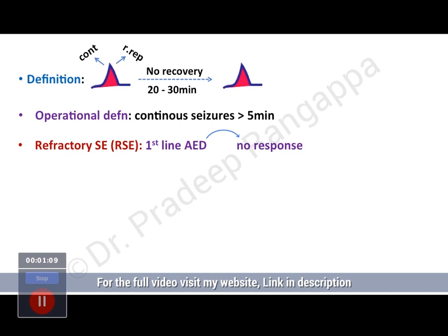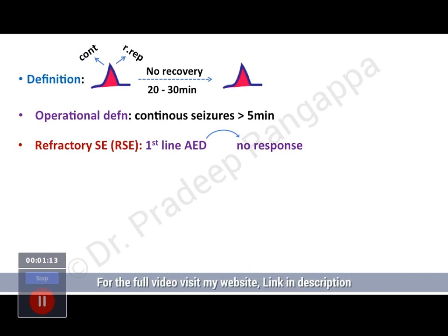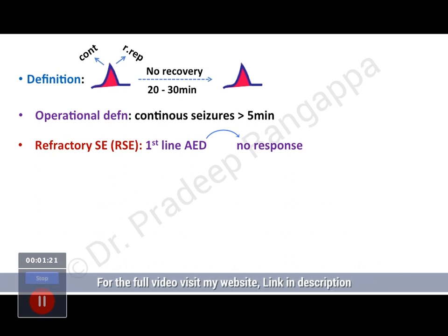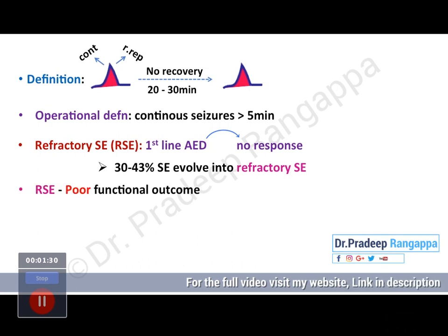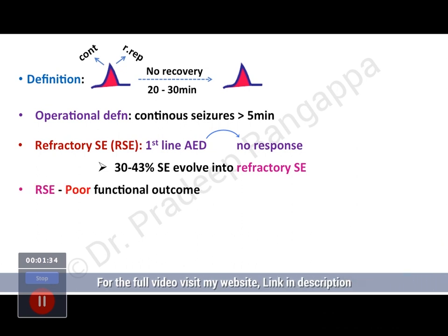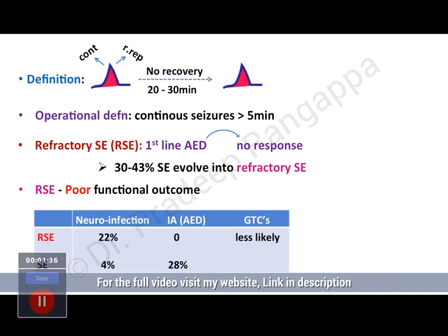There is also something called refractory status epilepticus, defined as when first-line anti-epileptic drugs have not worked — there has been no response and the seizure is continuing. Statistics show that 30 to 43 percent of status epilepticus cases evolve into refractory status epilepticus, and those patients are understood to have a poor functional outcome.